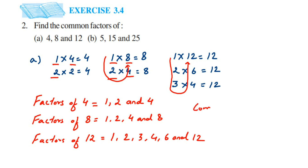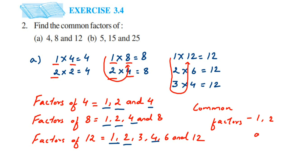Common factors are the numbers present in all three lists. 1 is present in all three, 2 is present in all three, and 4 is present in all three. So the common factors of 4, 8, and 12 are 1, 2, and 4.